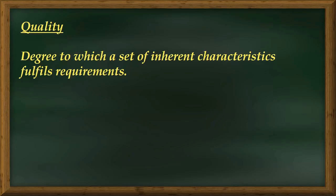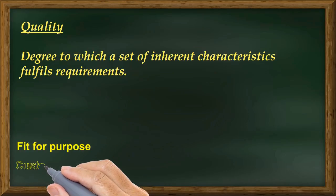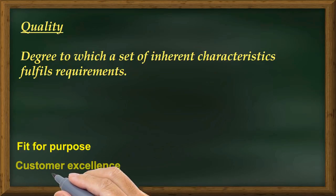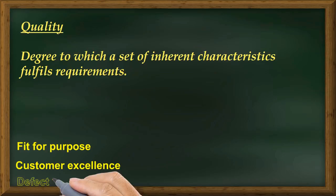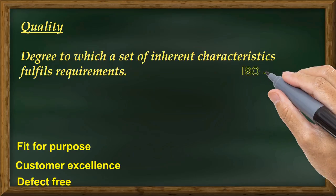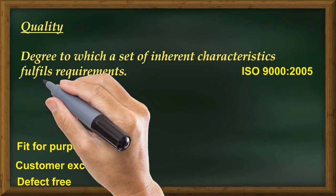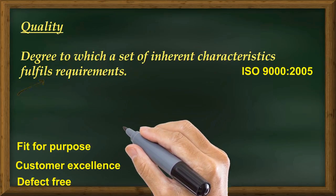A number of people have defined quality in a number of ways. Some have defined this as fitness for purpose, some as customer excellence, defect free — there are a number of definitions related to quality. But when it comes to an official or formal definition, ISO 9000-2005 has defined quality as the degree to which a set of inherent characteristics fulfills requirements.